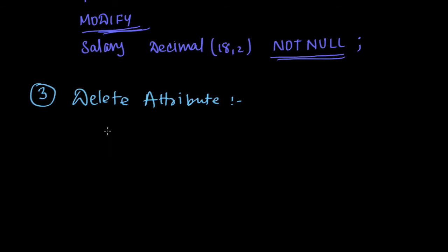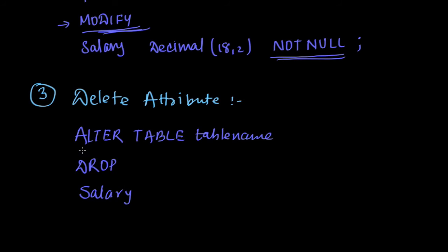In the third case, let's say we have an attribute that was unnecessary and we want to delete it from the existing table or schema. We use: ALTER TABLE table_name DROP salary. So instead of MODIFY we use DROP.